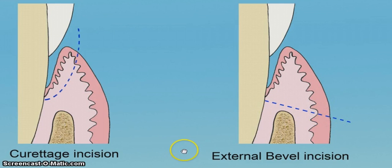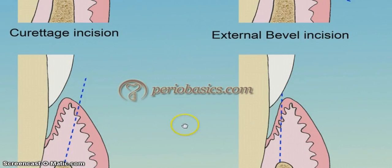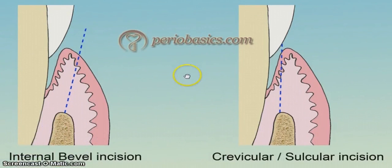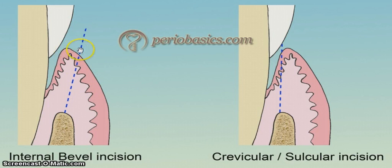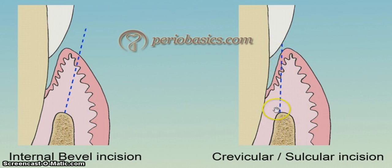This incision is called the internal bevel incision. It is given 0.5 to 2 millimeters away from the gingival margin and directed towards the alveolar crest. It is used in modified Widman flap surgery. This incision here is called the circular or crevicular incision.